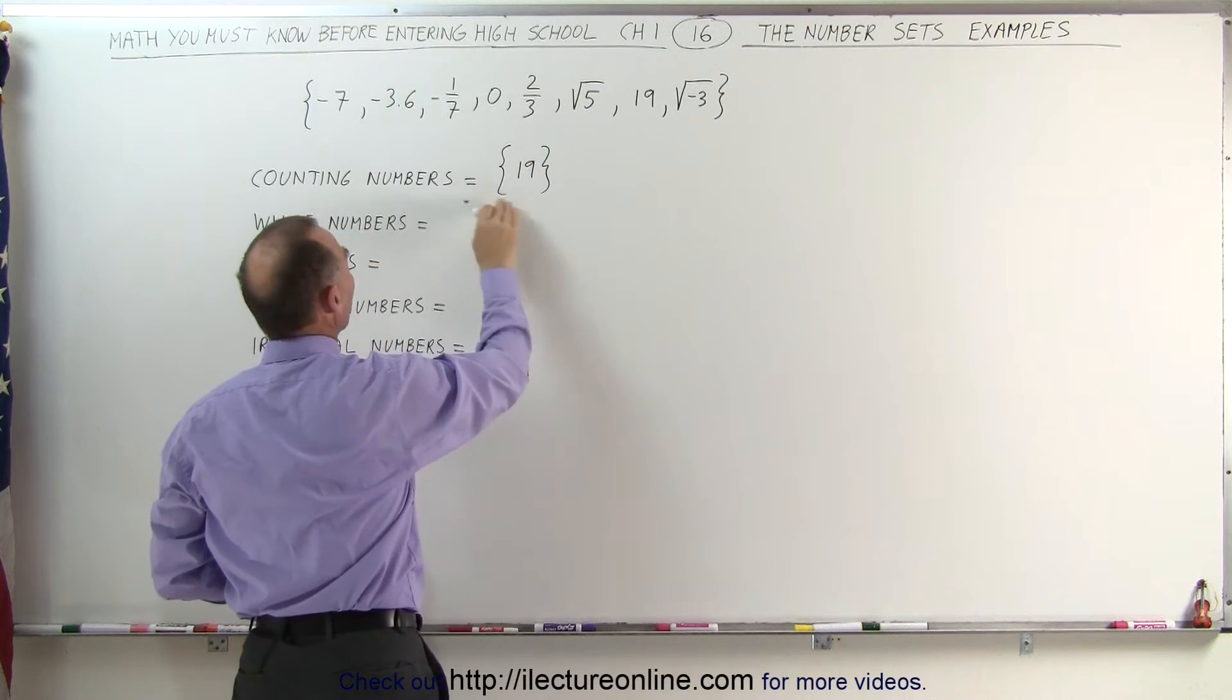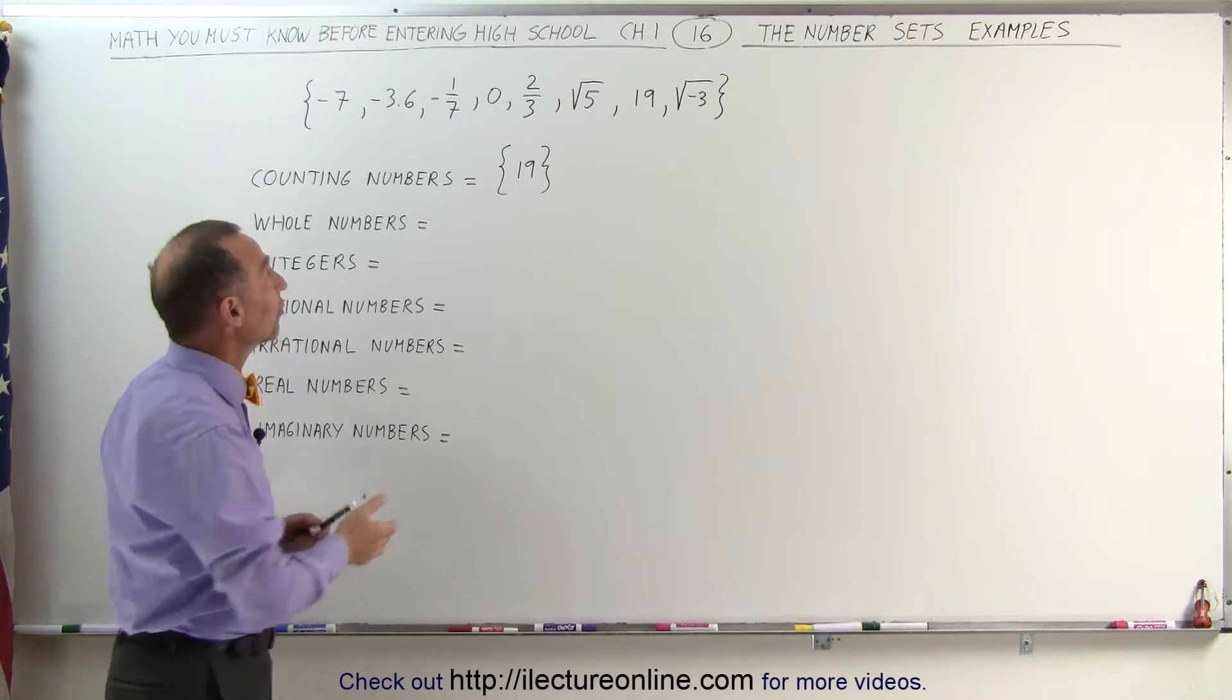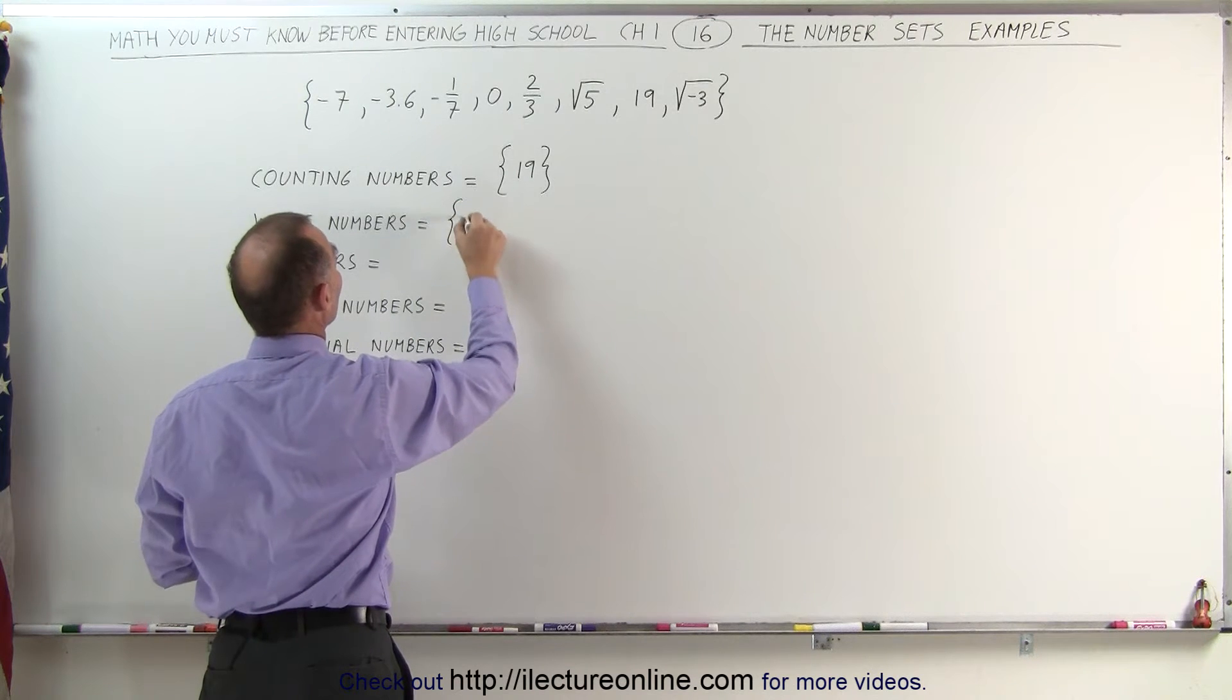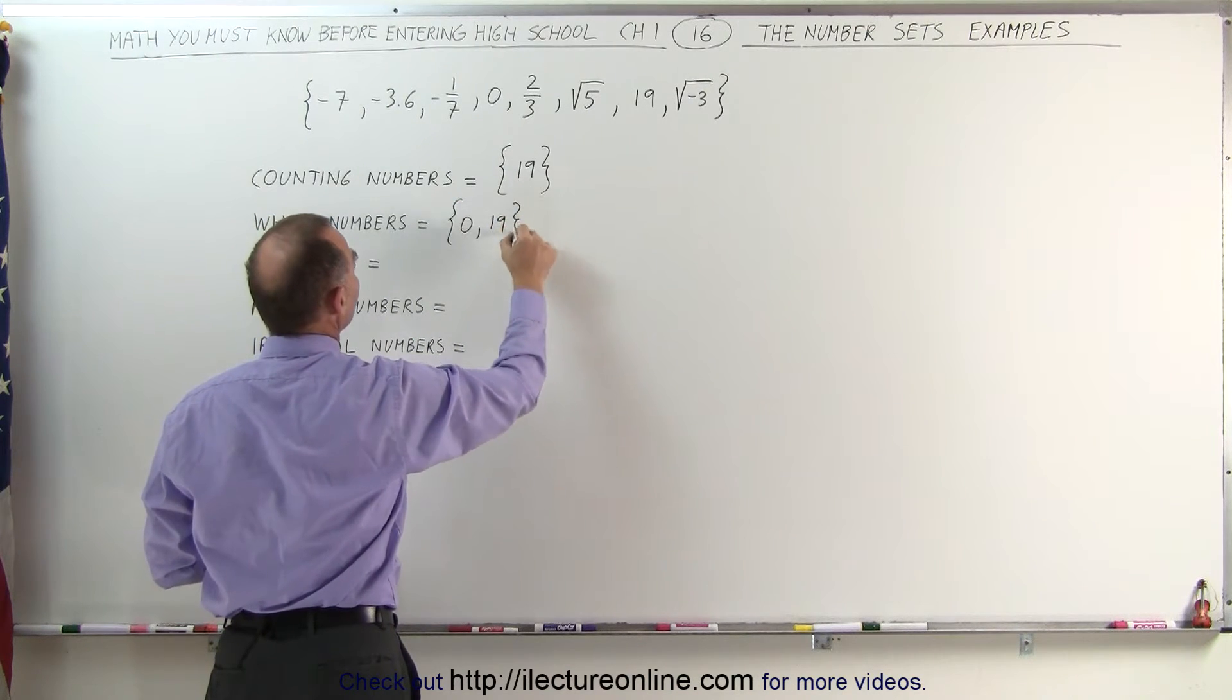Whole numbers are all the counting numbers plus the number zero if it's there. And yes, we do have the number zero, which means the whole number set is the numbers zero and the counting number 19.